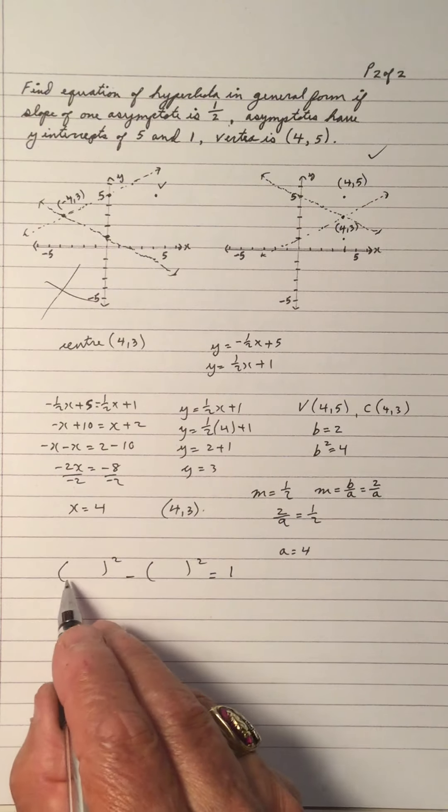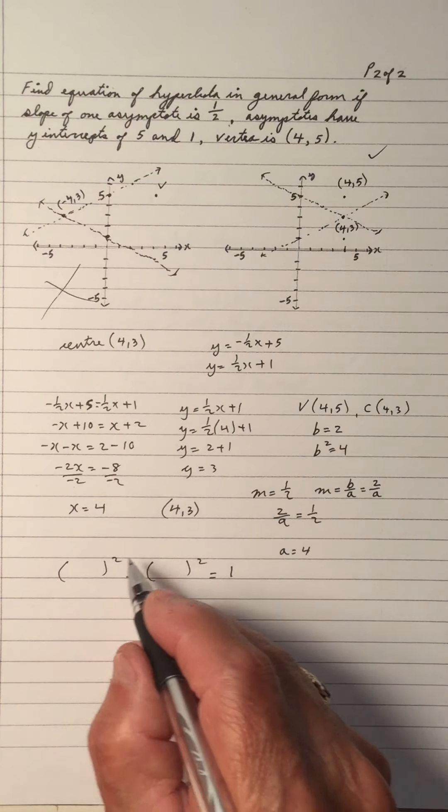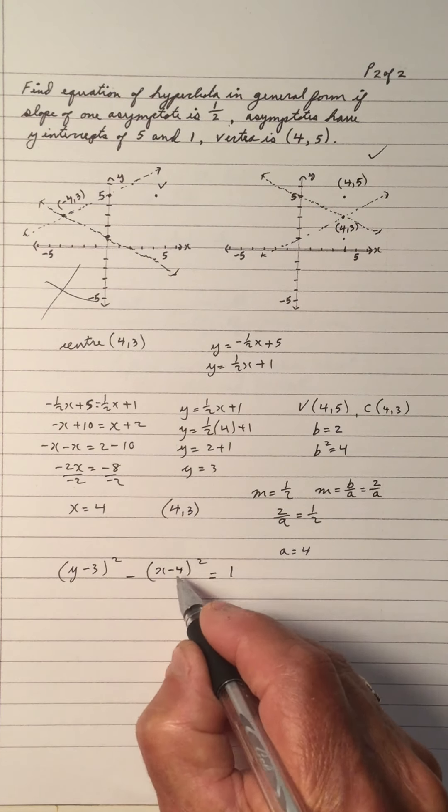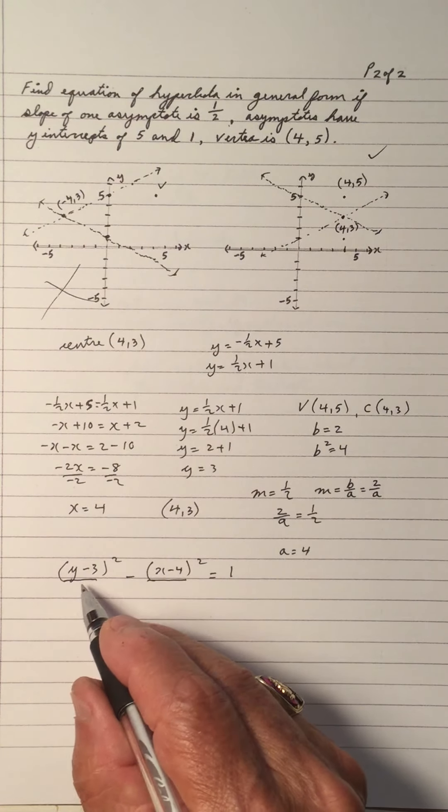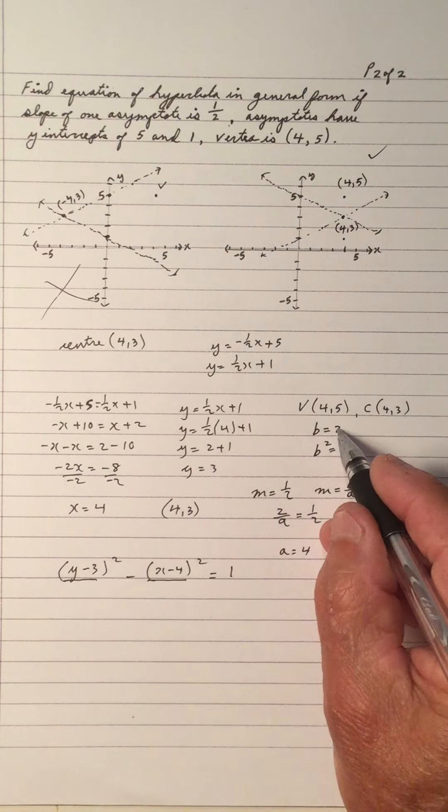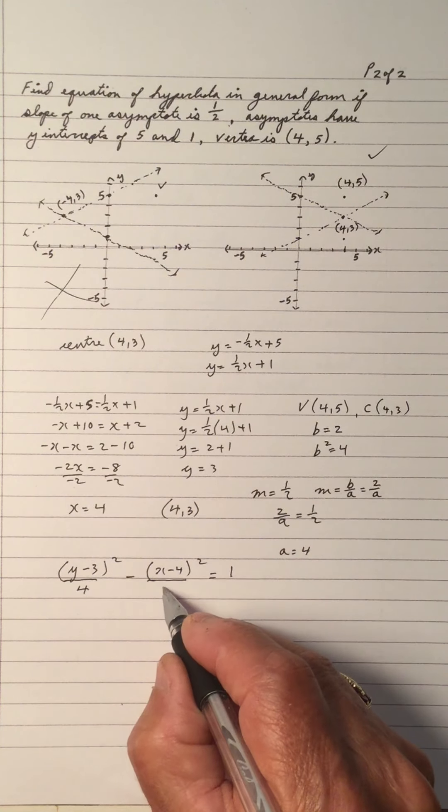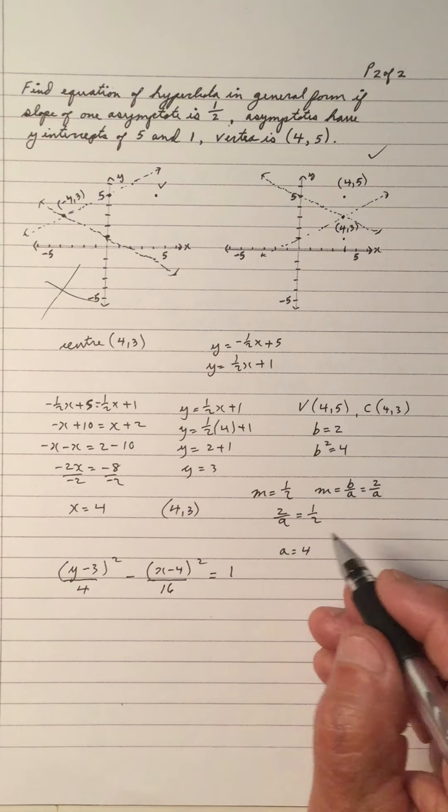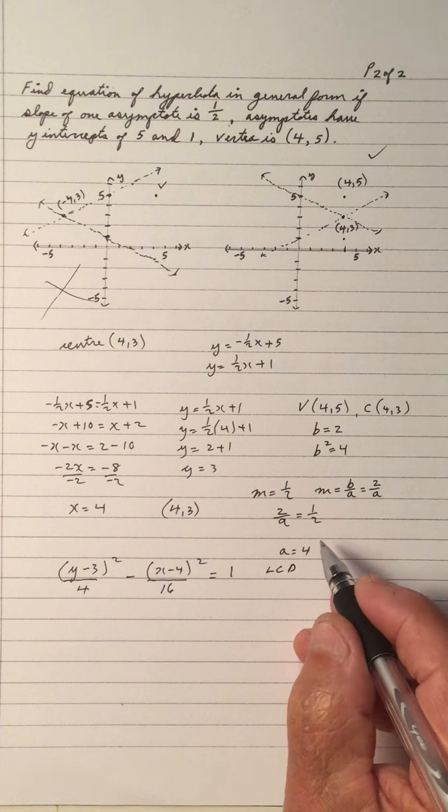So what happens? We have the center is (4, 3). So the y is first, so it's y minus 3, x minus 4, because it's the opposite. And the y is first, because the transverse axis is the vertical. So the b is 2, so this is b squared, so that's a 4. a is 4, so 4 squared, so that's a 16. So this is the equation in transformational form.